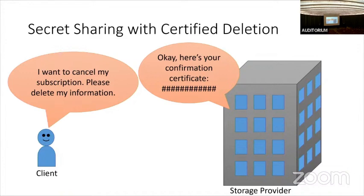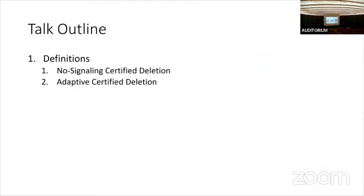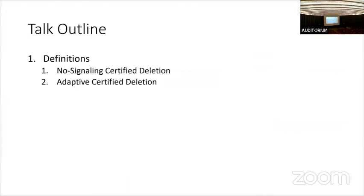So even if there is a data breach on this company, there's no issue. In this work, we have three main contributions. The first is definitions of secret sharing with certified deletion. The second is constructions. The third is a new tool we use to build our constructions and do the analysis, which is a high-rate randomness extractor for certain quantum entropy sources.